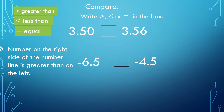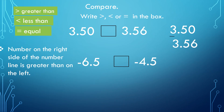Let's have more examples comparing decimals. We have 3.50 compared to 3.56. Line them up and first compare their whole numbers — they are the same. Next, the tenths — they are also the same. So check the hundredths: 0 and 6. Zero is less than 6, therefore 3.50 is less than 3.56.